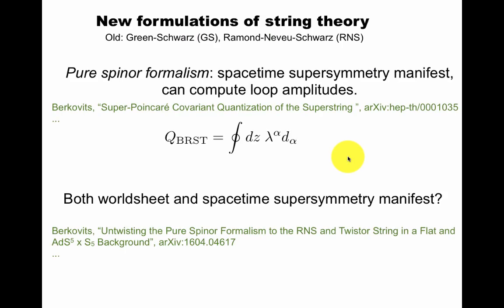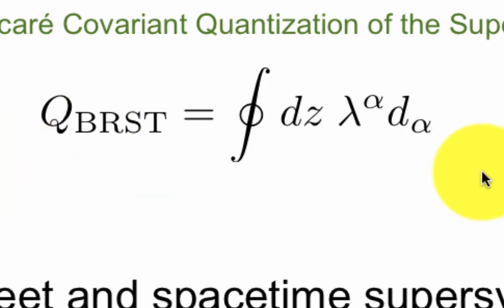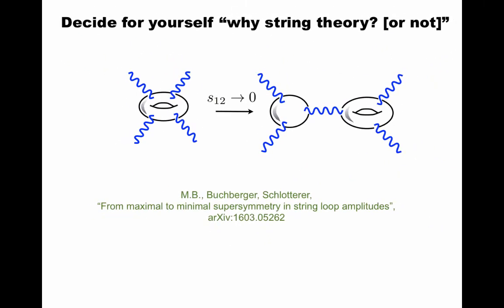There's new formulations. This is also a work in progress. The old formulations, I mean, Green-Schwarz or Ramond-Neveu-Schwarz formulations, that are written in textbooks. But a newer formalism from 2000 is a pure spinor formalism. Space-time supersymmetry is manifest. You can compute loop amplitudes and define a BRST operator that I mentioned earlier in terms of a pure spinor and this object that gives a space-time supersymmetry derivative. So you should decide for yourself in this paper and its follow-up. You can see some of my motivations why I think string theory is exciting.